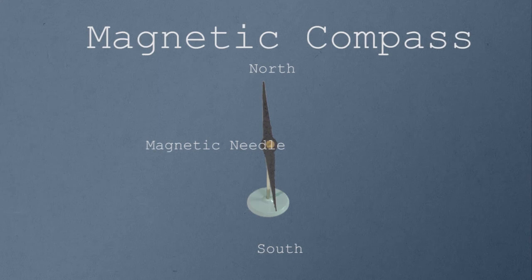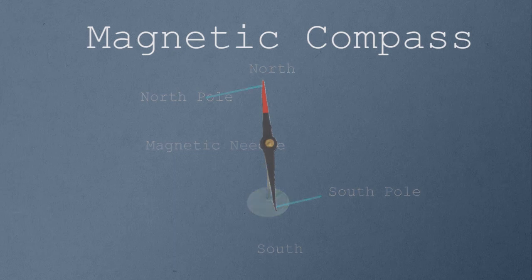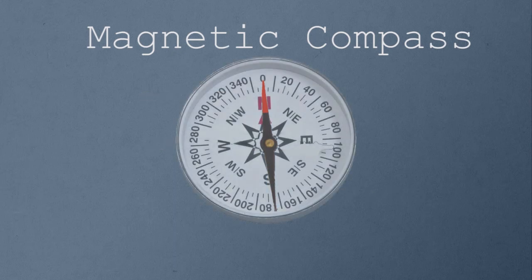The needle comes to rest in the geographical north and south directions. The end which shows geographical north is the north pole of the magnetic needle. For indication purposes, this end is painted red at the tips. The end which shows geographical south is the south pole, and it is left unpainted. This type of magnetic needle is used in a magnetic compass.